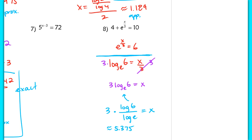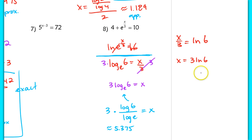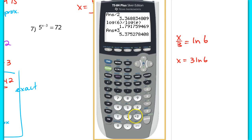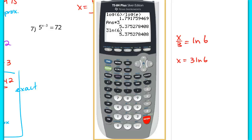Alternatively, using inverse operations: take the natural log of both sides directly. That cancels the base e, leaving x over 3 equals the natural log of 6. Multiply by 3: x equals 3 times the natural log of 6. Plugging in 3 times natural log of 6 gives the same answer — 5.375. There are multiple valid approaches; inverse operations is usually quicker.